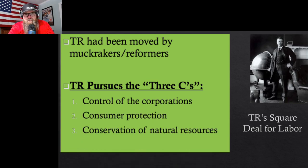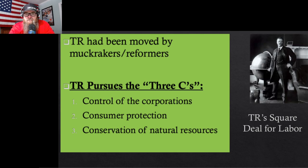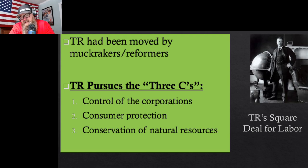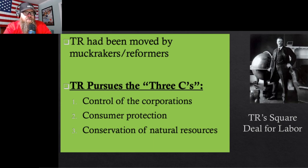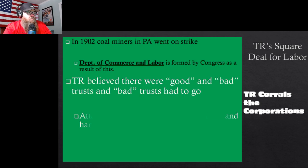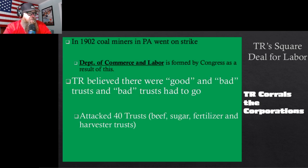Teddy Roosevelt is the big progressive president. He pursues the Three C's: Control the corporations, Consumer protection, and Conservation of natural resources. Conservation is what he's most known for — and it's also what causes him to come back and challenge Taft later.